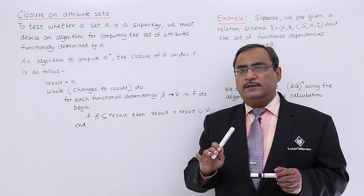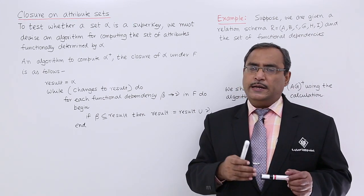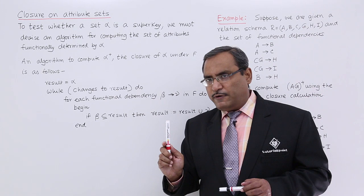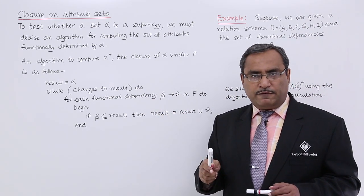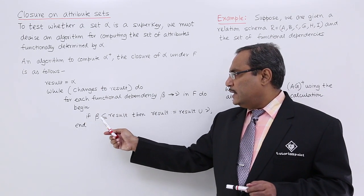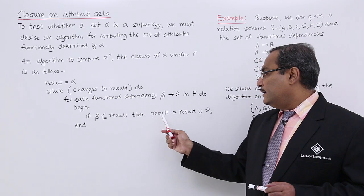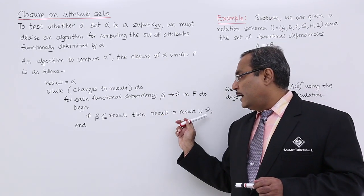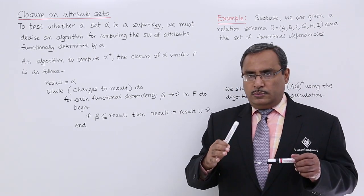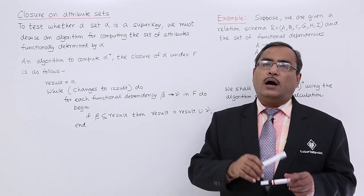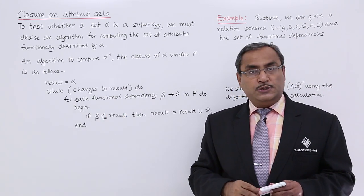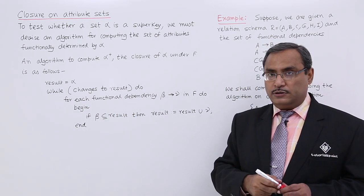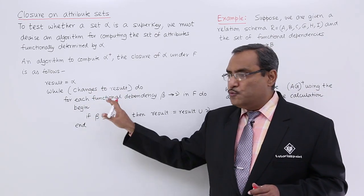For each functional dependency beta determines gamma in F — where beta and gamma are sets of attributes — if beta is a subset of result, then result is equal to result union gamma. So if beta is already a subset of result, the right-hand side gamma is added via union to populate the result with more attributes. This process continues until the while condition becomes false.